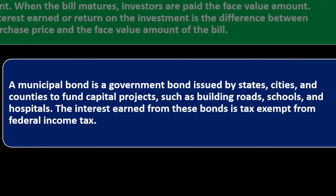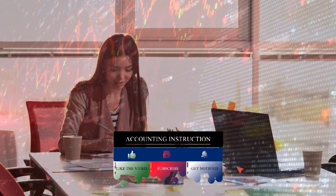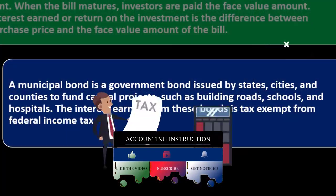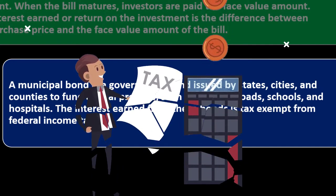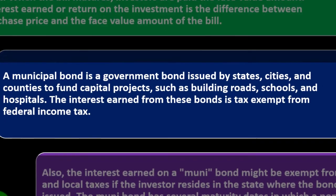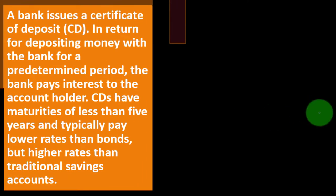A municipal bond is a government bond issued by states, cities, and counties to fund capital projects such as buildings, roads, schools, and hospitals. The interest earned from these bonds is tax exempt from federal income taxes. Interestingly, the idea is that states should be able to generate revenue without federal interference — that's how this developed. Also, interest on a muni bond may be exempt from state and local taxes if the investor resides in the state where the bond is issued. Munis are usually sold with a $5,000 face value.